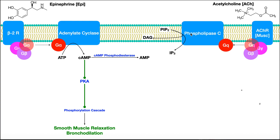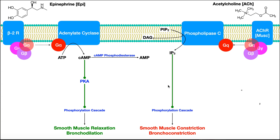When activated, phospholipase C is going to catalyze the breakdown of PIP2 into two molecules: diacylglycerol (DAG), which remains in the membrane because it's a lipid and can recruit other proteins, and IP3 or inositol trisphosphate, which is released into the cytoplasm. This IP3 is going to trigger a phosphorylation cascade, but it has the exact opposite effect of cyclic AMP. IP3 is actually going to trigger smooth muscle contraction or constriction, which leads to bronchoconstriction.